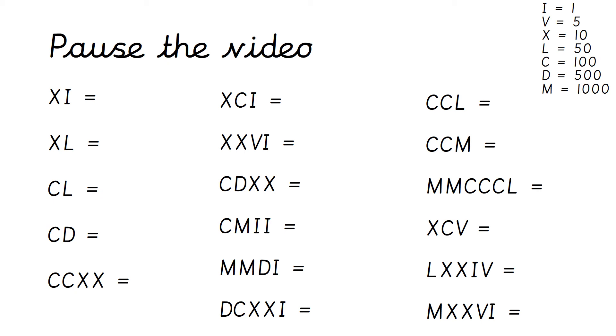Okay, so let's have a look at the answers then. So XI is 11 because X is larger than I, so you add them together. XL is 40 because X is smaller than L, so you take X away from L. CL is 150 because C is larger than L, therefore you add them together. CD is worth 400 because C is less than D, therefore you take C away from D.